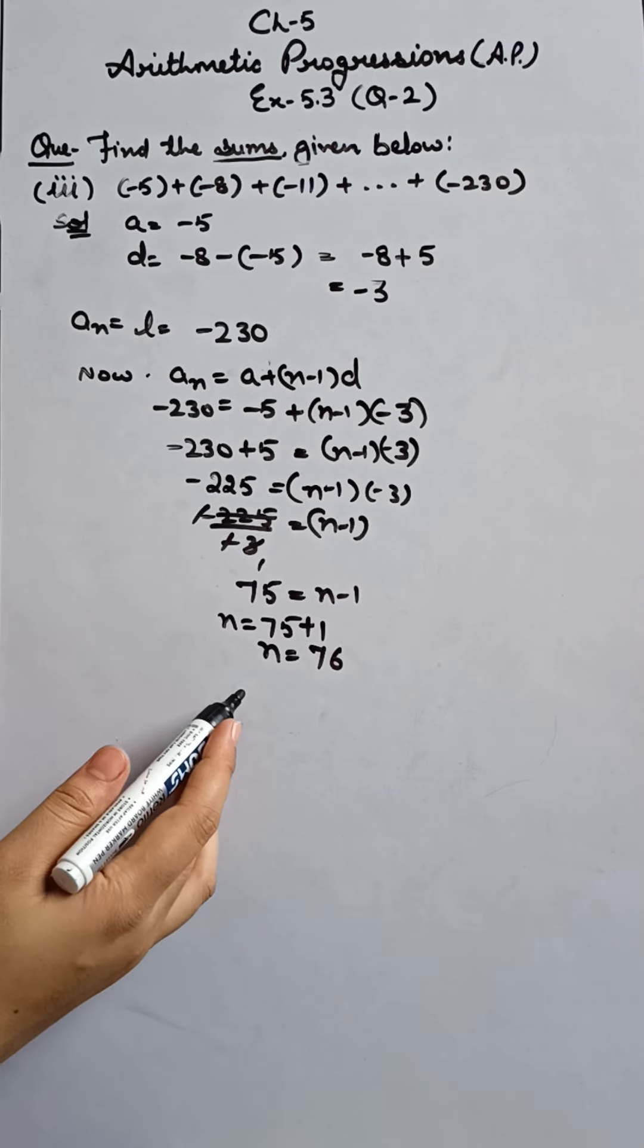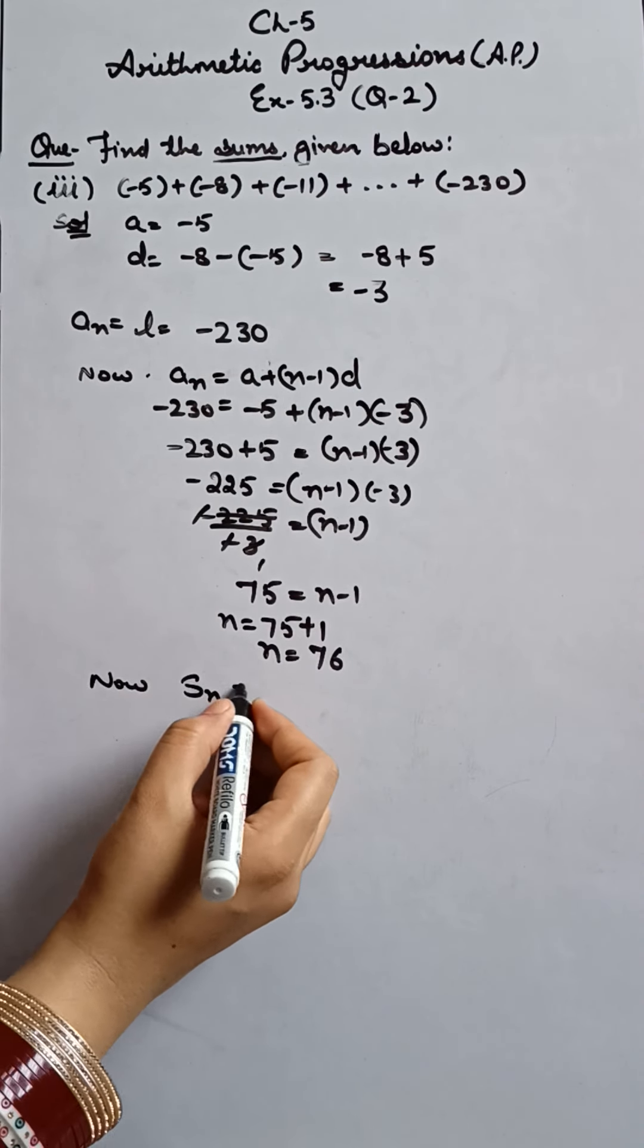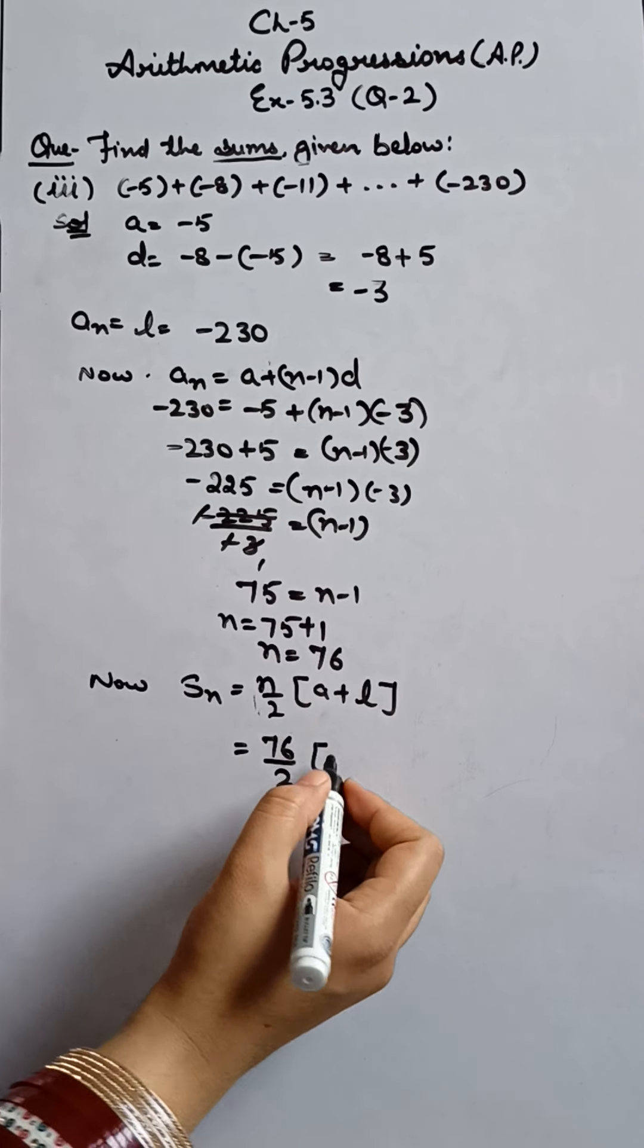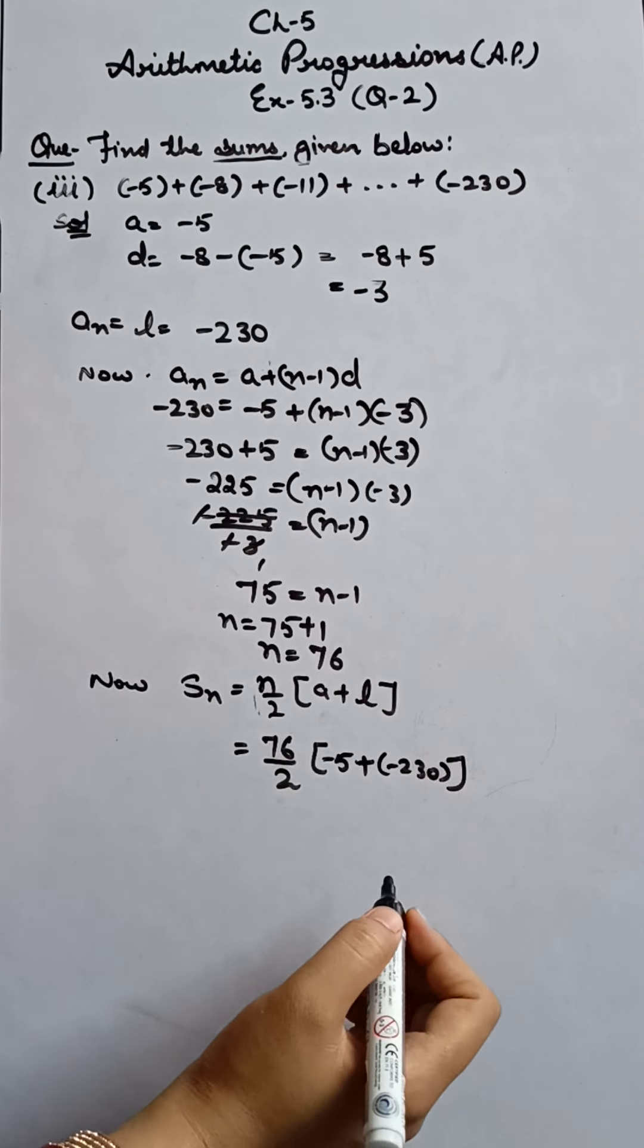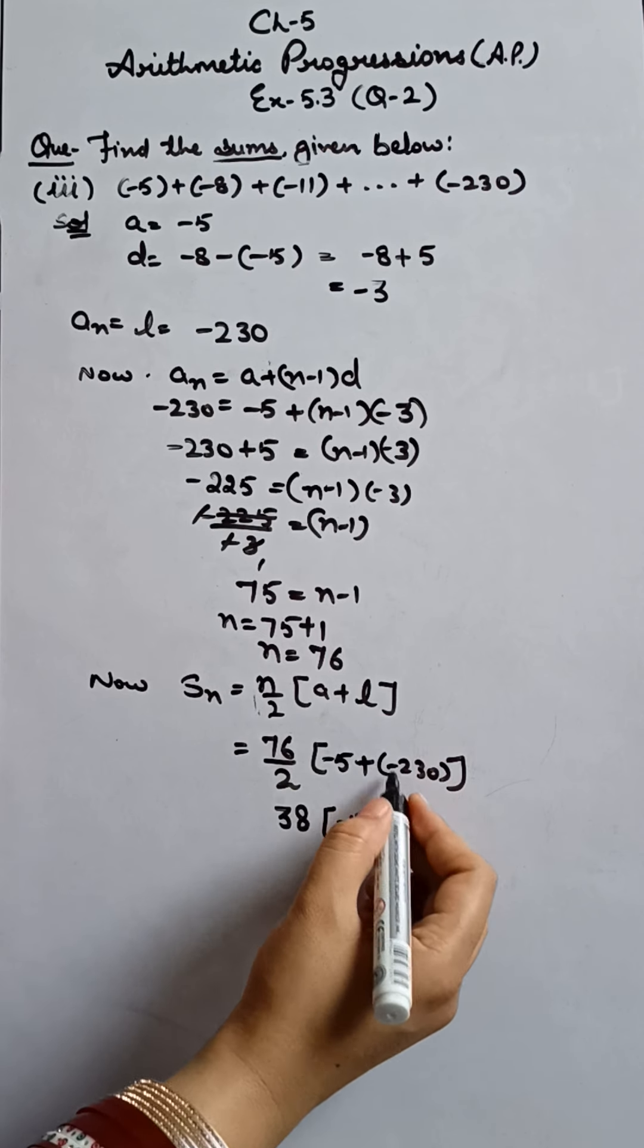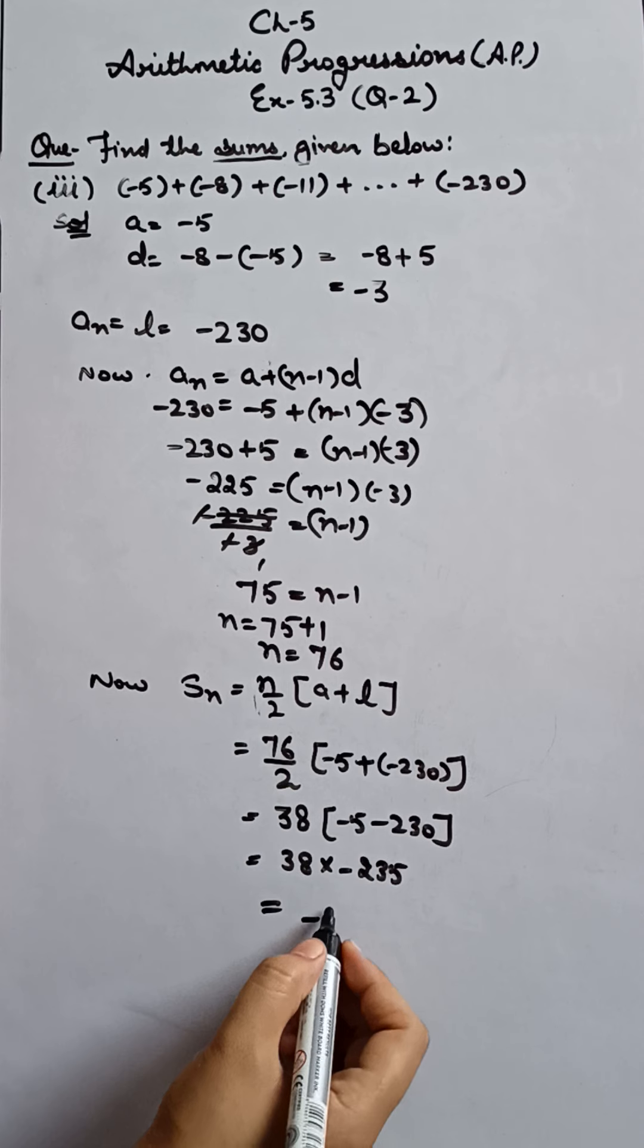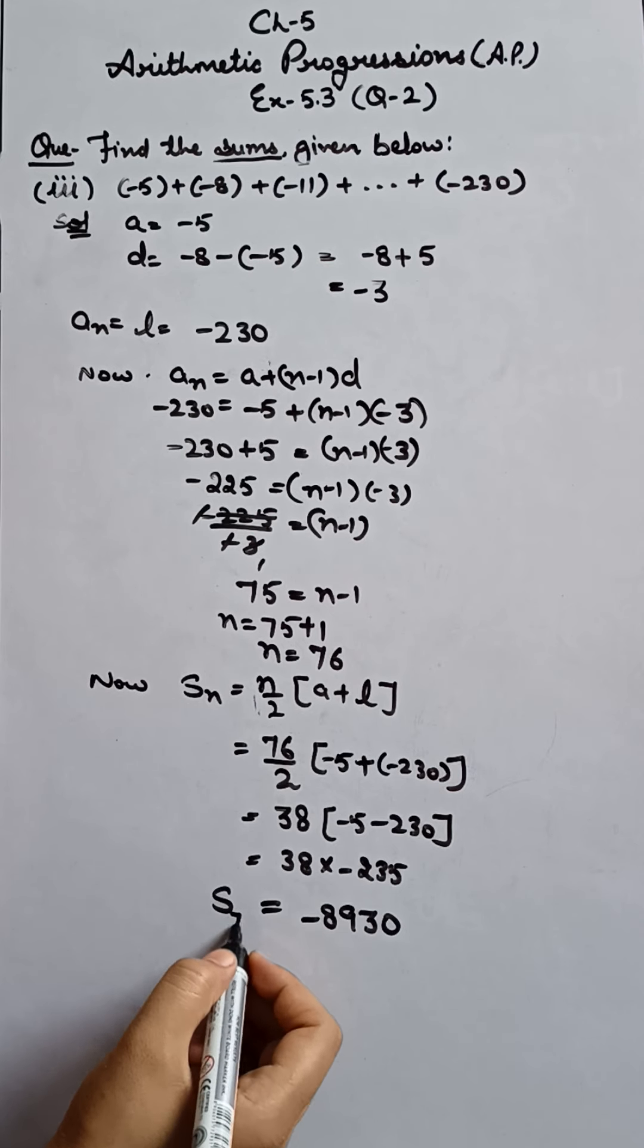But this is not the answer. What did we have to find? Sum of this AP. So to find sum, what will we do? We will apply the SN formula. N upon 2 into A plus L. N is 76 upon 2. A was minus 5. And L was minus 230. Okay? So 76 cancel with 2, we get 38. Minus 5 plus minus 230 is minus 235. 38 multiply minus 235. And after multiplying, the answer is minus 8930. And this is the answer for sum of 76 terms.